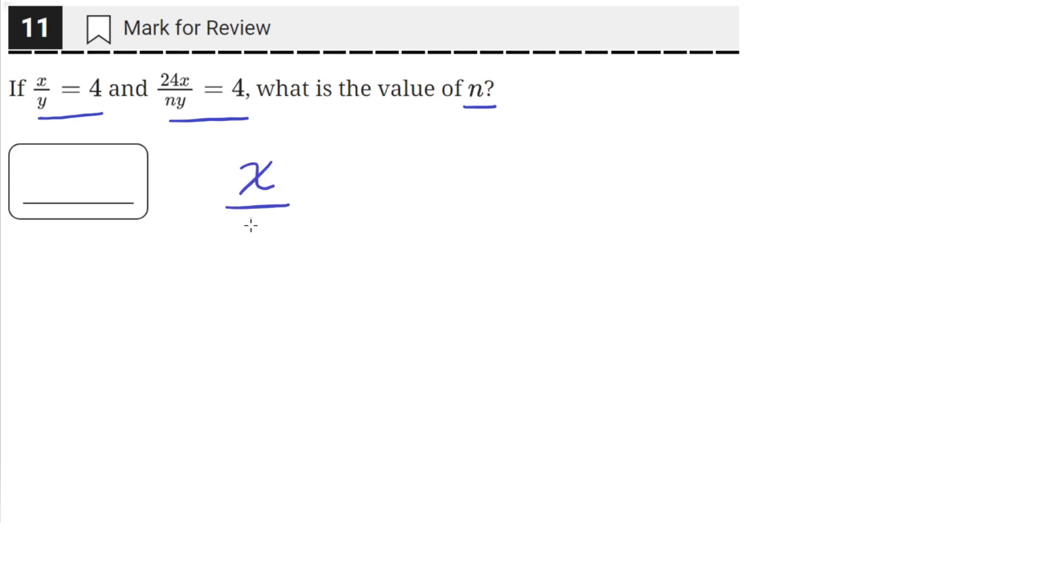So we're given these two equations: x over y equals 4, and 24x over ny equals 4 as well. And we need to solve for the value of n.